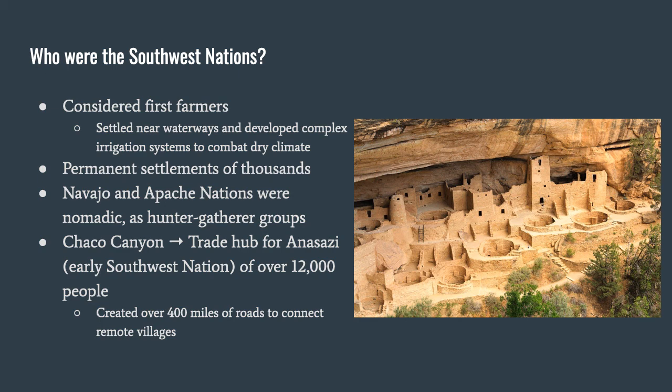Similar to the Southeast nation, the Southwest nations had a trade hub that numbered over 12,000 people — and that is Chaco Canyon. Folks from lower North American nations would travel through Chaco Canyon, and they created over 400 miles of road to connect remote villages so they could be connected to this trading hub.